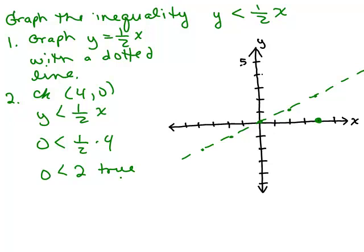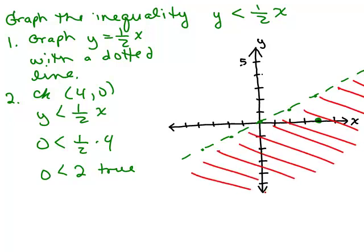So what does that mean? That means the solution, I'm going to use red here to not confuse it with that dotted line. So my solution is all the ordered pairs on this side of the line, right? Up to and touching basically, not exactly touching this line. And so there we've graphed y is less than 1 half x. Let's go on to another one.